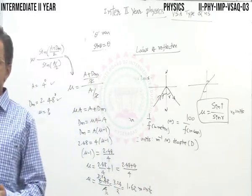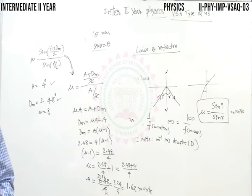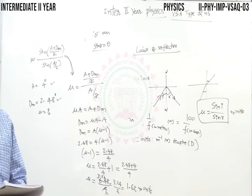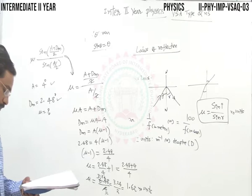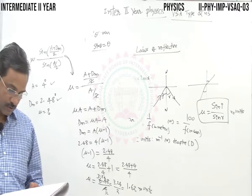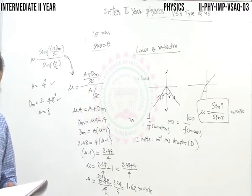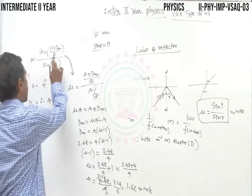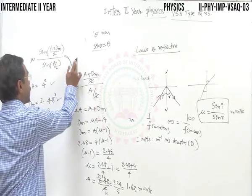Please note down: a small-angled prism of 4 degrees deviates a ray through 2.48 degrees — find the refractive index of the prism. For small-angled prisms, when theta is very small, sin theta equals theta as well as tan theta.